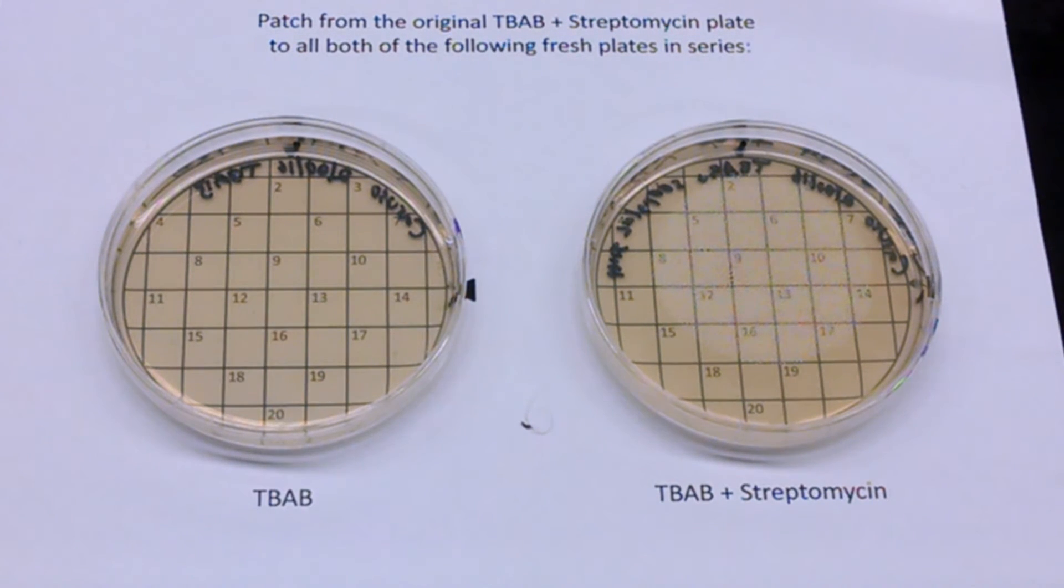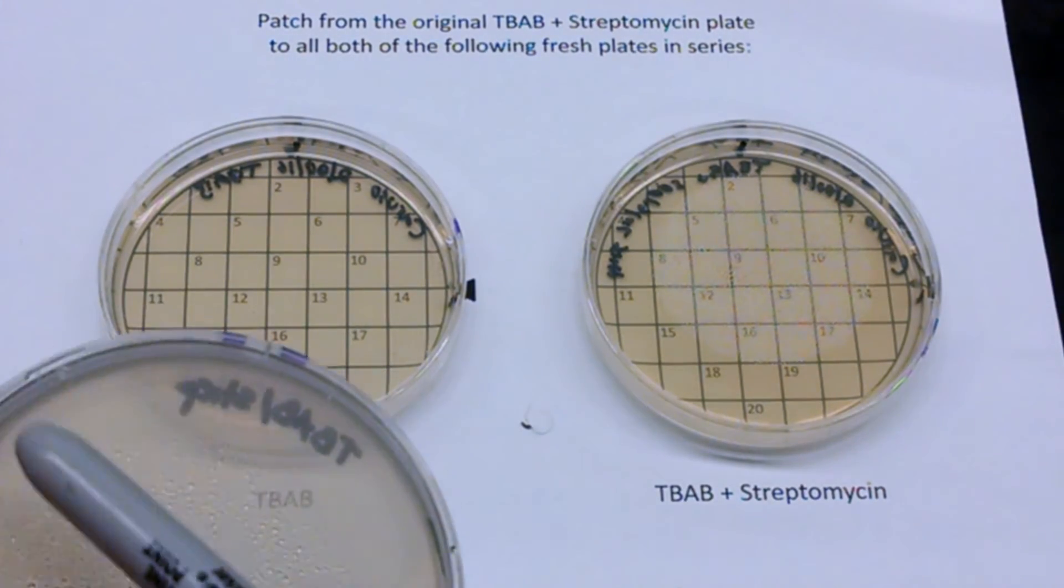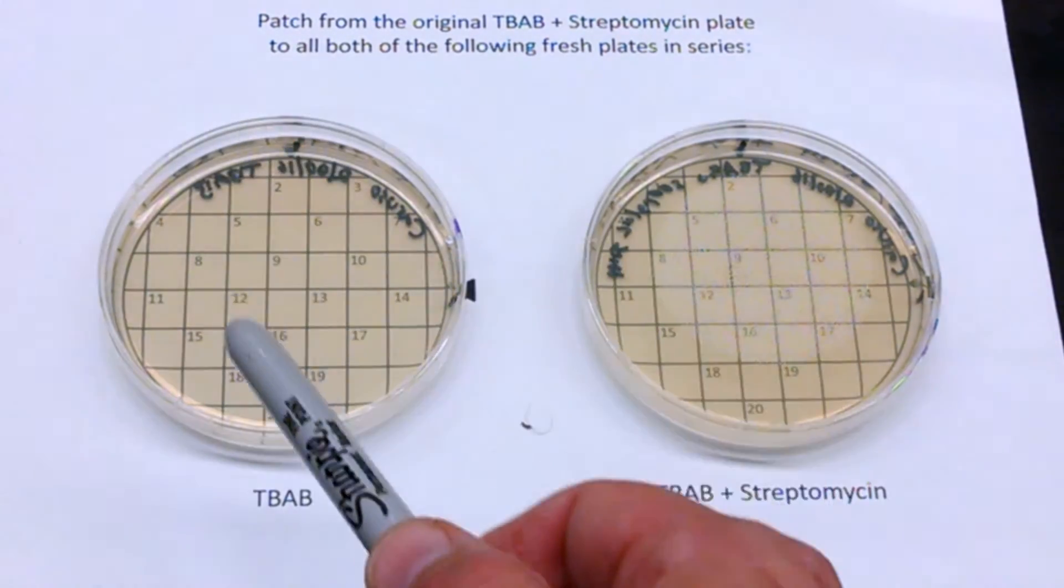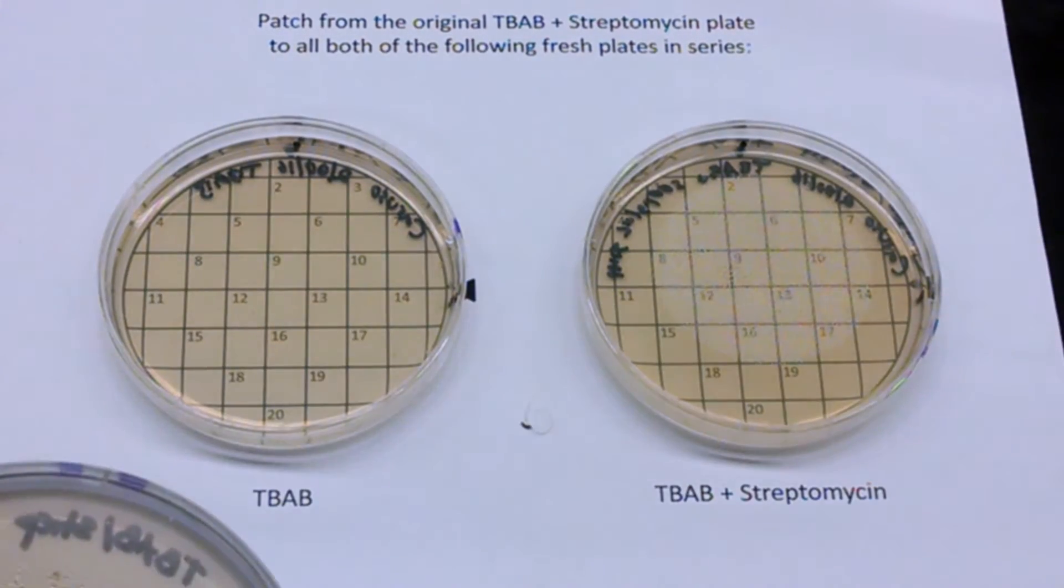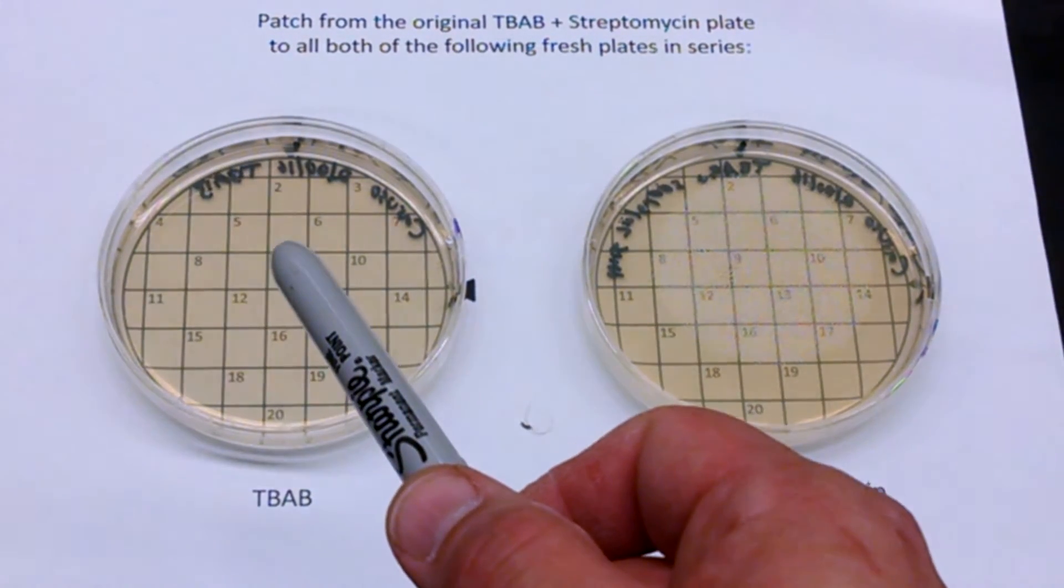And so each one of these squares is a place for you to take your toothpick, touch a colony. And so if you don't have 20, you're not going to be able to do 20. You don't have to do one of them 20 times. But you're going to touch a colony and you're going to draw a line. Don't just put a dot because you want to see how well it grows. You're going to draw a line filling one of these squares.